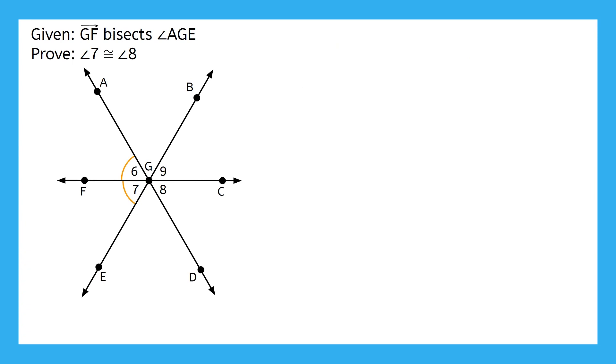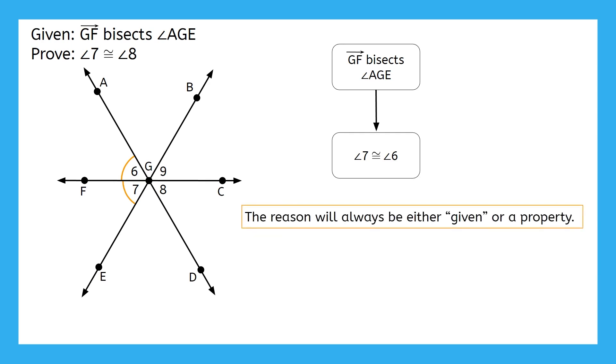Let's start with what we know so far. We know that Ray GF bisects angle AGE, and we know that angle 7 is congruent to angle 6. And I know that these are related to each other. Which one did I know first? Ray GF bisects angle AGE came first. And then from there, I figured out that angle 7 is congruent to angle 6. That means our first arrow is going to go here. See how the arrow shows the order of the statements? Don't forget about the reasons. Remember, we have two options for reasons in proofs. They will either be given or they'll be from our property list. So how do I know that Ray GF bisects angle AGE? That was given to us.